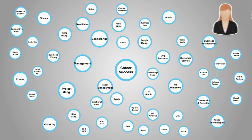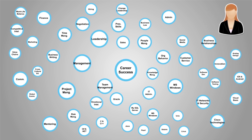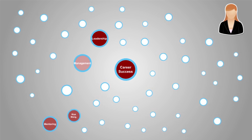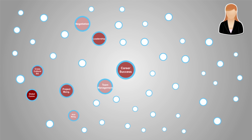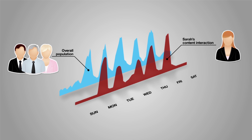Let's look at Sarah. Sarah is an Acara employee who aspires to be a cross-geography project manager. Through this heat map, we can see her content consumption patterns from a few weeks ago. Recently, she was staffed on a project in China and has now been consuming content related to that new role. Previously, her content interaction was spread across the week, like the overall population.